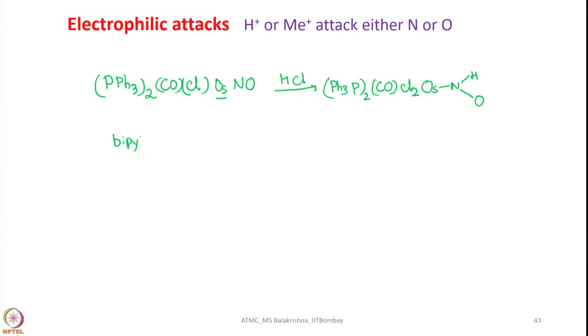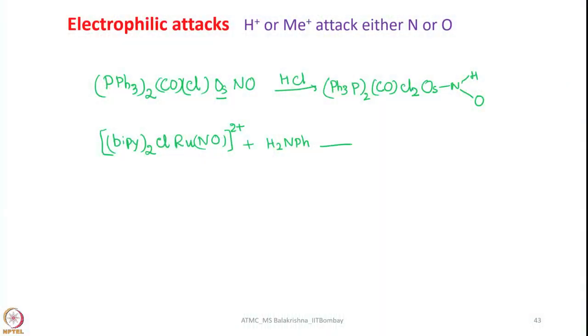Now let us look into another example — a 2,2'-bipyridyl complex of ruthenium. When noting down these reactions, you shall also practice electron counting; for all reactants and products you should do electron count so that you will be familiar with this electron counting method.